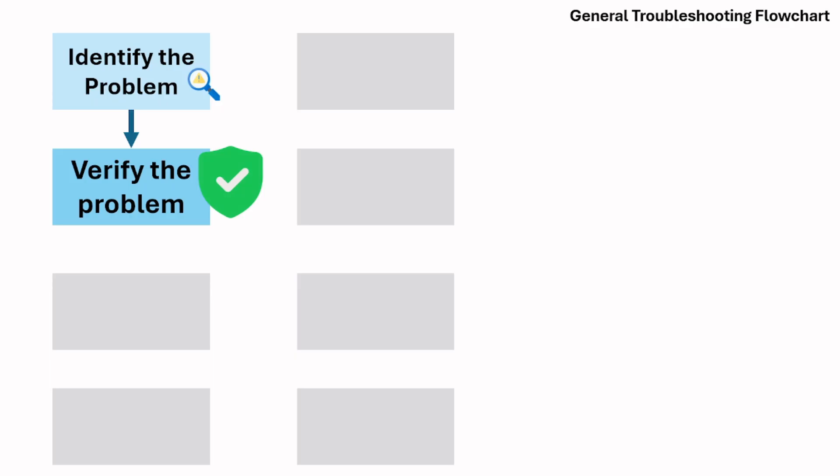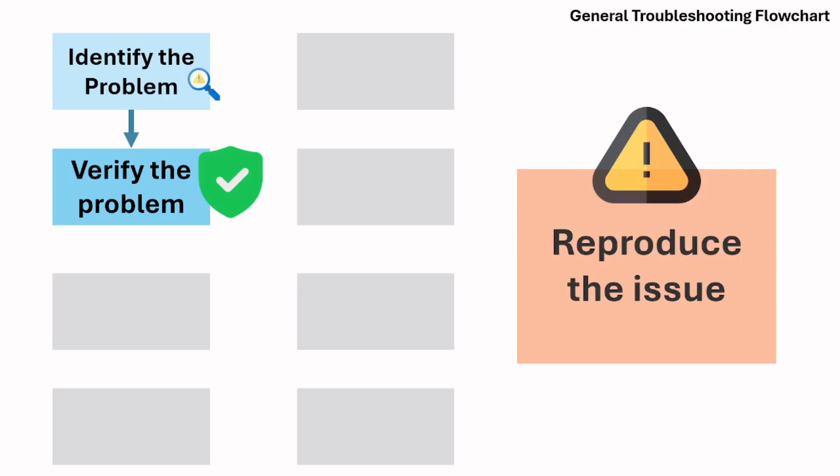We can now proceed to the next step: verifying the problem. What you can do next is try to reproduce the issue yourself. 'I'm also going to try and see if I can print the PDFs on your computer.' Sometimes users report issues that don't match what's actually happening — confirming ensures you're solving the real issue. 'Okay, so I've confirmed that you cannot print any PDF files on your laptop.'